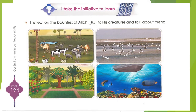This is an initiative to learn. Look at these pictures and try to find the link between them, and talk about the bounties of Allah that He bestowed upon us. We can see birds, animals, trees, and fish. The link between them is that all these are creatures of Allah and all need water to survive. Try to find more similarities between all these pictures.